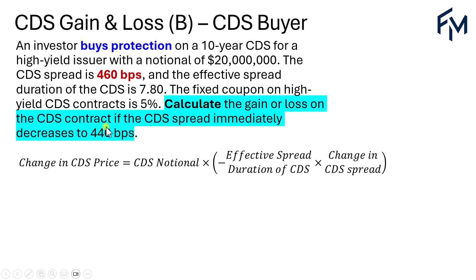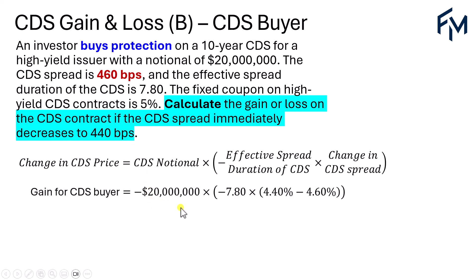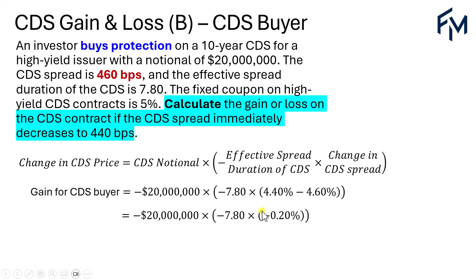Using the alternative method with negative $20,000,000 for the short position, and a change in CDS spread of 4.4% minus 4.6% — a decline — with three negatives multiplied together, we get negative $312,000. This is exactly the same result as obtained earlier.